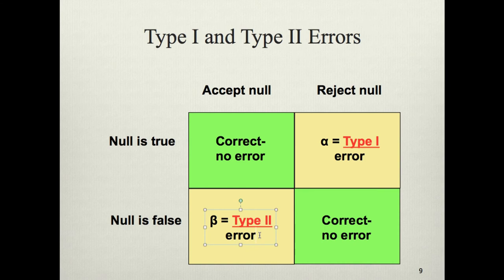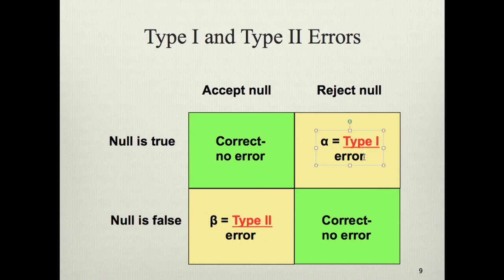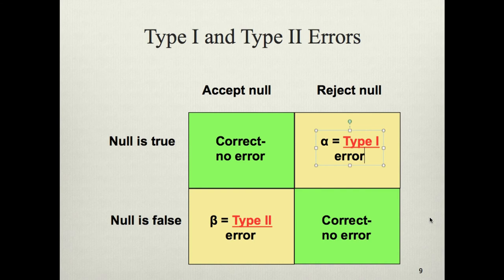Think of beta error as letting a guilty man go free, and type 1 or alpha error as condemning an innocent man. In the Western world, we want fair trials, and we are willing to occasionally allow a guilty person to go free in order to minimize the risk of condemning an innocent person. Type 2 error is letting a guilty man go free; type 1 error is condemning an innocent man. Alpha and beta are related, and this has to do with statistical power.